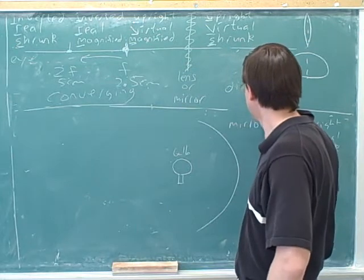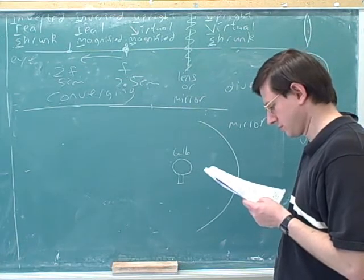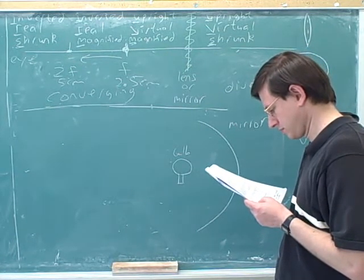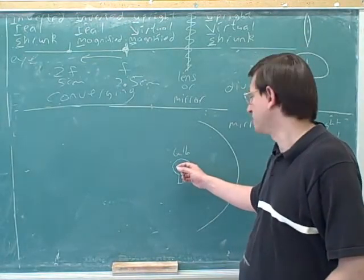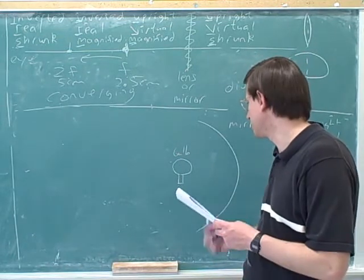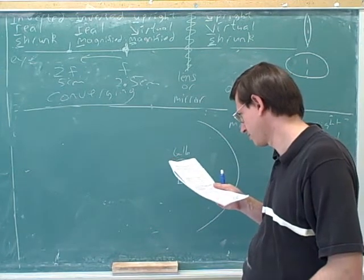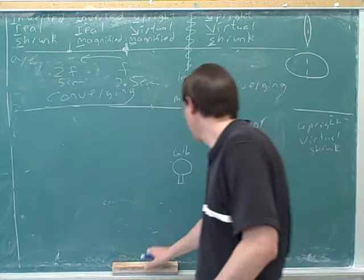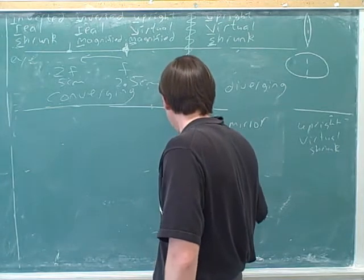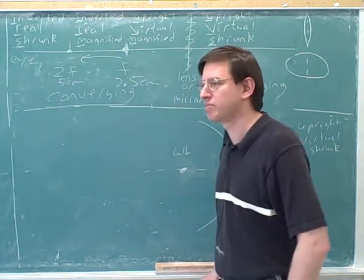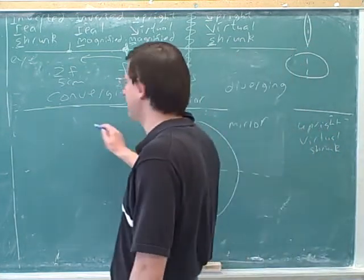So here we have a mirror. Here we have a bulb. And obviously, the bulb is going to be shooting out light rays. I'll draw the bulb as a dot. So here's the bulb. And what's going to happen to the light rays? Well, they're going to bounce off the mirror and then go out here.